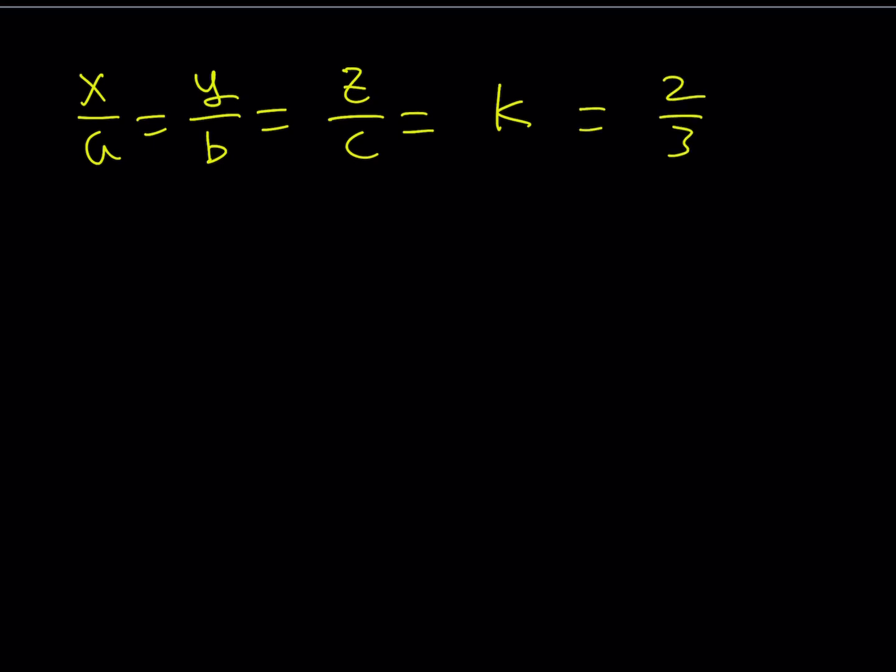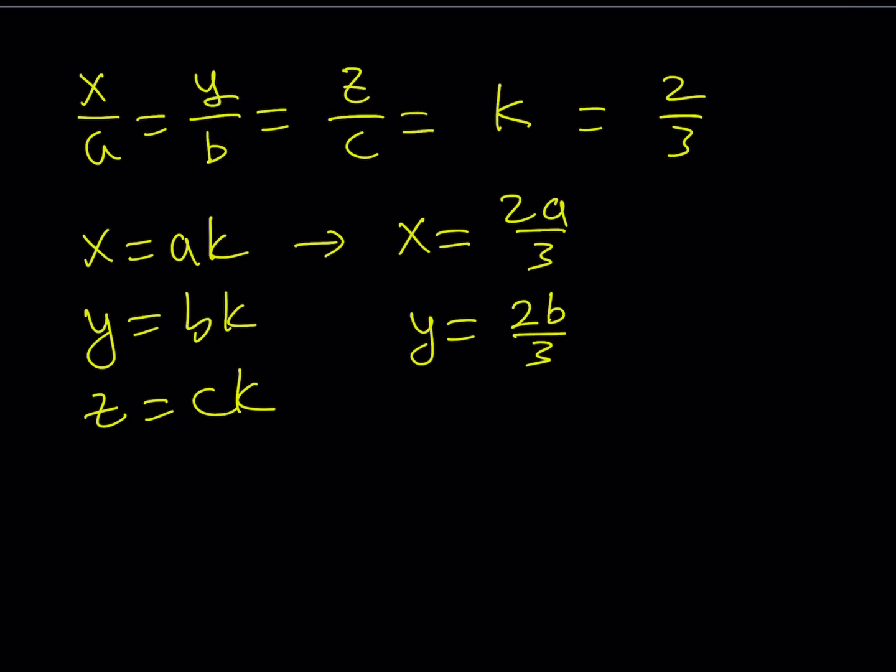What do you get from here? x equals ak, y equals bk, and z equals ck. From here, we can find the values. They're going to be x equals two a over three, y equals two b over three, and z equals two c over three. So we get the values of x, y, and z here.